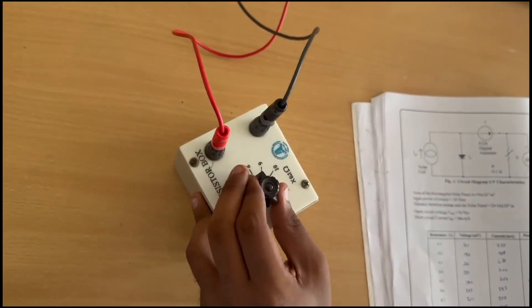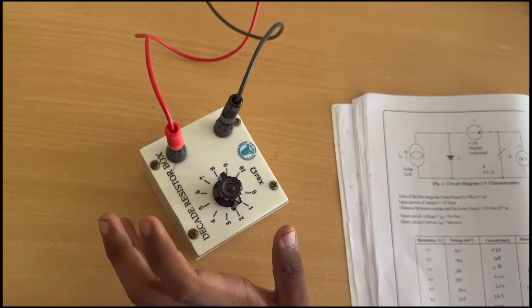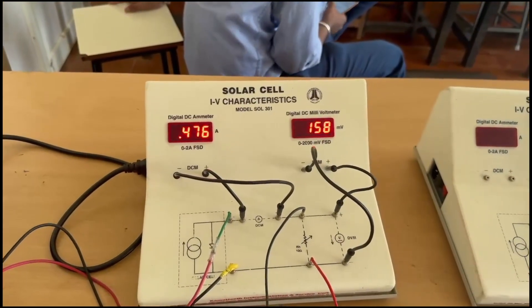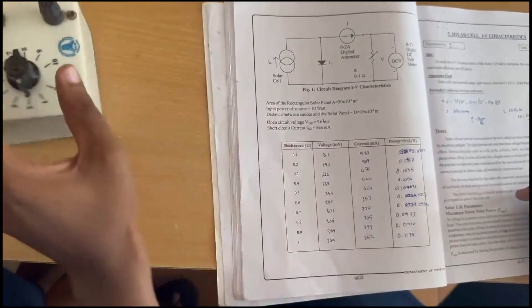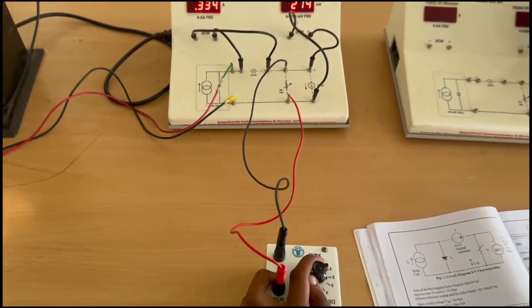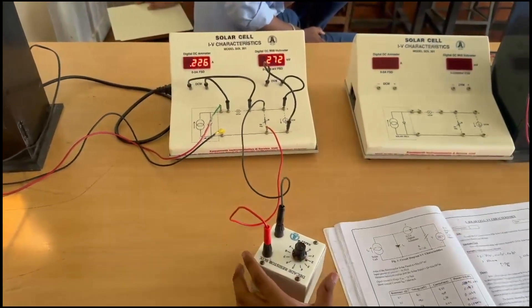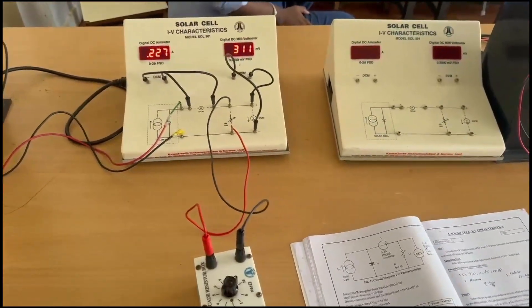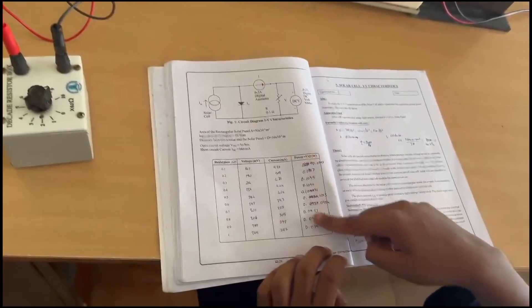Next, increase the resistance to 0.2 ohms. You get 159 millivolts. Note that in the respective box and keep increasing resistance to 0.3, 0.4, 0.5, 0.6, 0.7, and 1.0 ohms. Once done, you have collected all values.